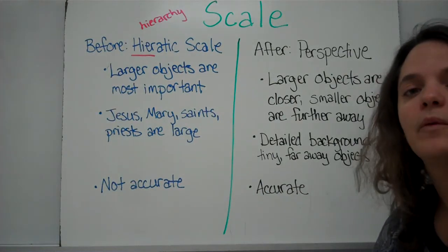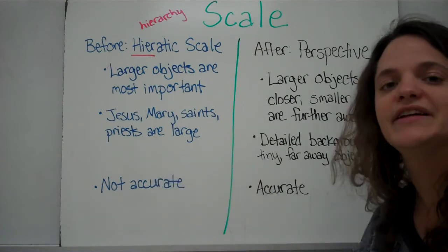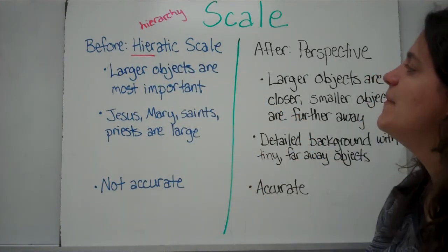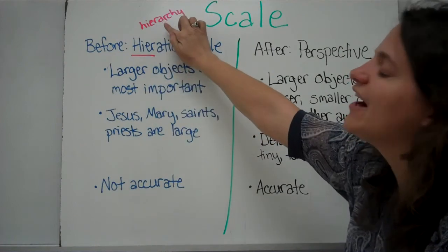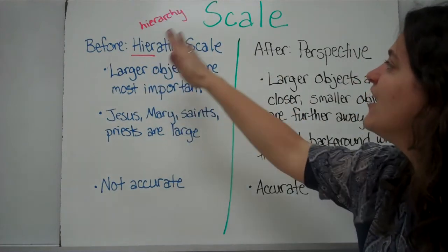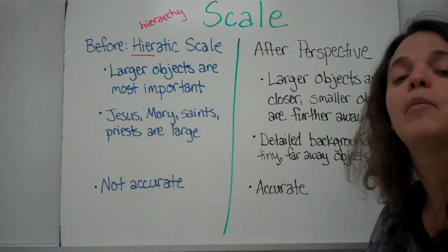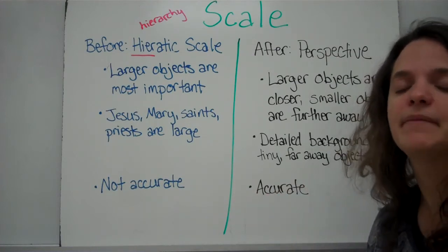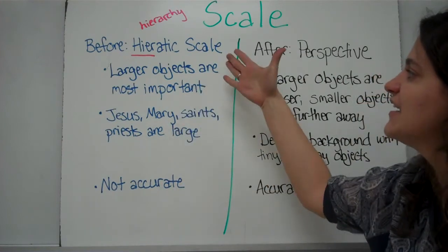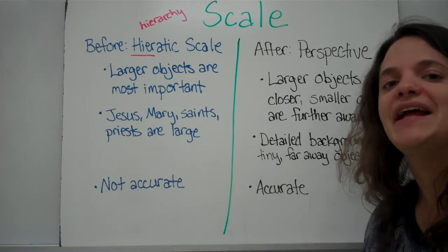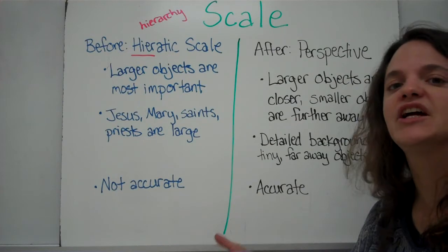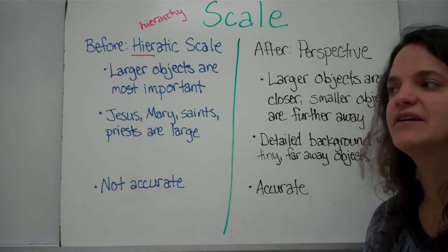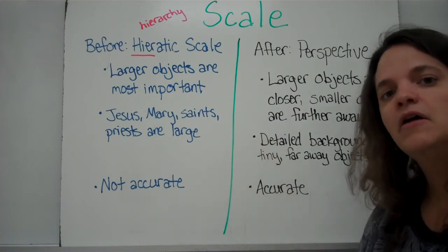Another thing to think about when looking at artwork is scale — the size of objects relative to one another in a painting. Before the Renaissance, they used what was called the hieratic scale. It has the same root as the word hierarchy, so a hierarchy is a ranking. A hieratic scale means that the larger objects in a painting are the most important — they're ranked according to importance and the size reflects that. Because religious topics were so important in the Middle Ages, holy people like Jesus, Mary, the saints, and priests would be very large, while regular people, plants, and animals would be very small.